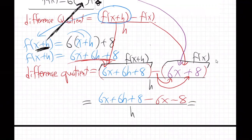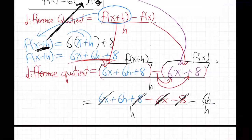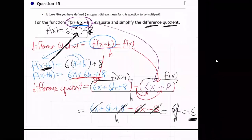And so that'll equal, well, the 6x and 6x will cancel. The 8 and the 8 will cancel. 6h over h. The h is cancel. 6. The answer to all that is just 6.